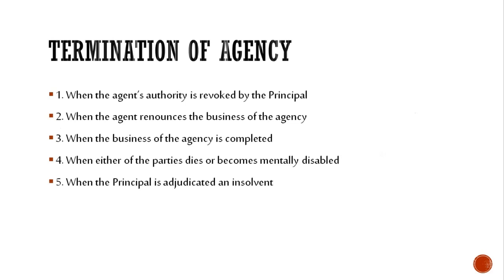Termination of agency। Agency terminate होती है: जब principal agent की authority revoke कर दे; जब agent agency का business renounce कर दे; जब agency का business complete हो जाए; जब दोनों parties में से किसी का भी death हो जाए या mentally disabled हो जाएं; या जब principal insolvent हो जाए।